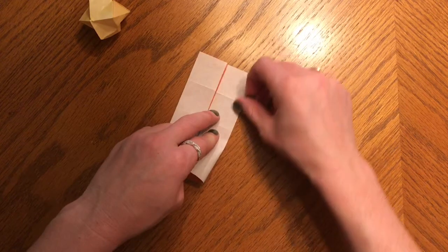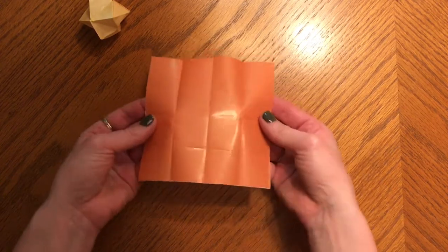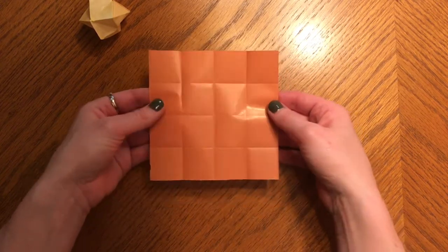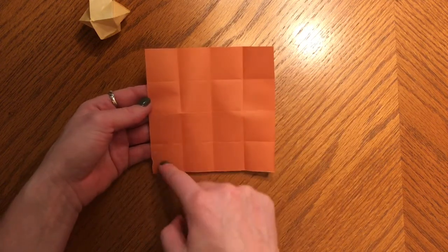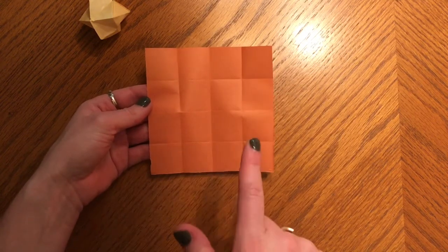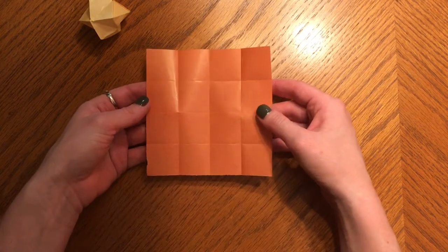By the time you finish you should have 16 squares. 1, 2, 3, 4 by 1, 2, 3, 4. So 16 lovely little squares.